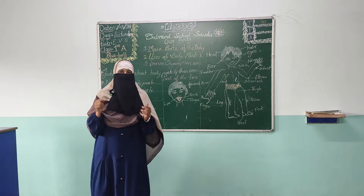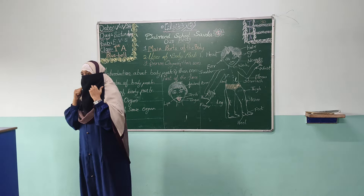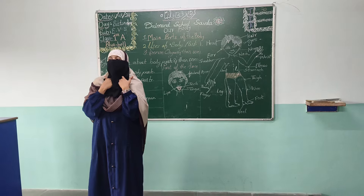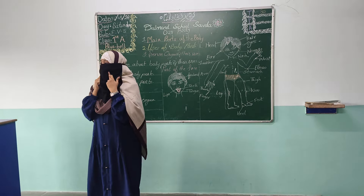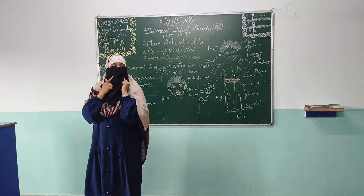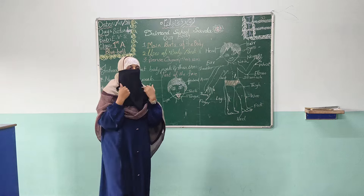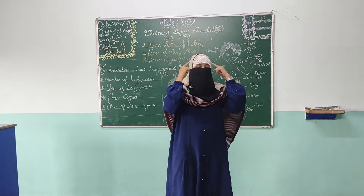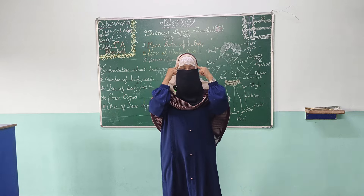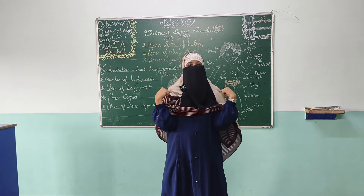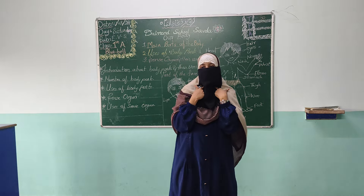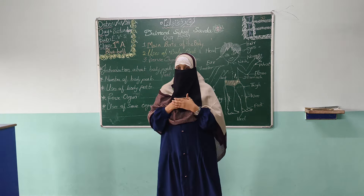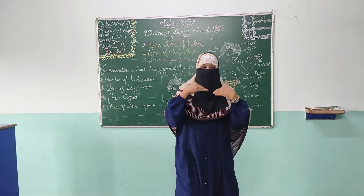These are the uses of our head — head consists of face parts. Then our neck: what is the use of neck? It helps the movement of our head. With the help of neck, we can move our head, and also the neck joins the head to the body. It's a joining part.